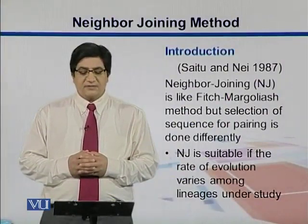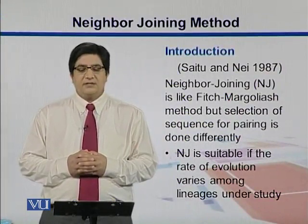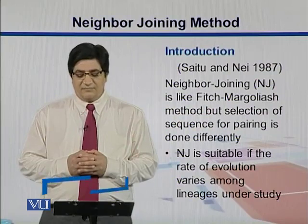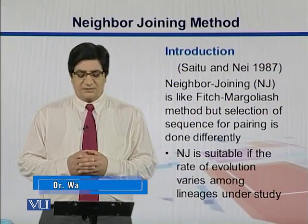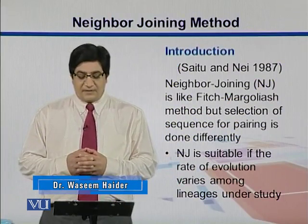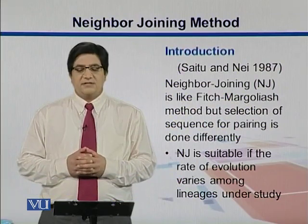This Neighbor-Joining method, commonly called NJ, was presented by Saitou and Nei in 1987. It's like Fitch-Margoliash, but the selection of sequences is different. This is suitable if the rate of evolution varies among lineages under study.